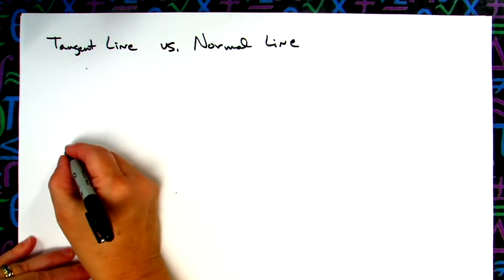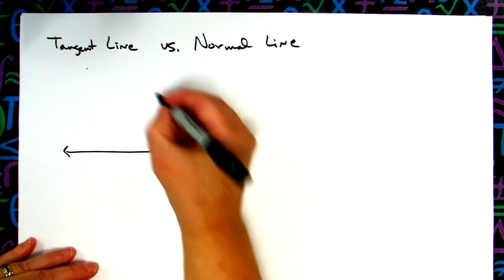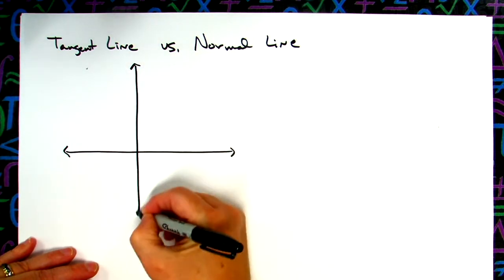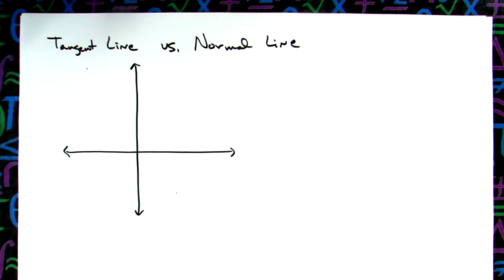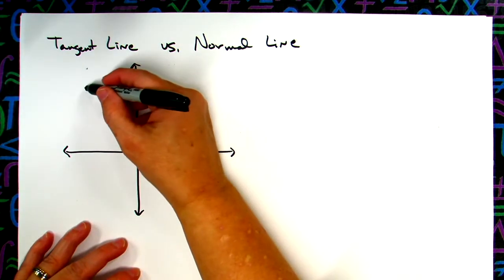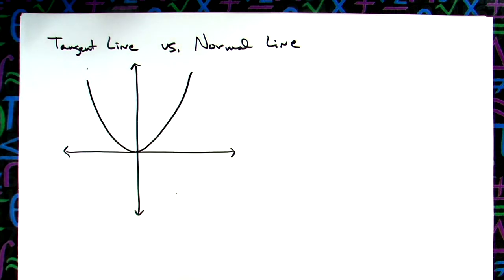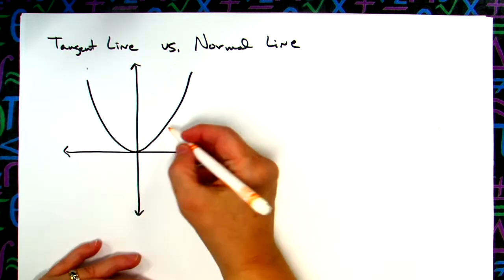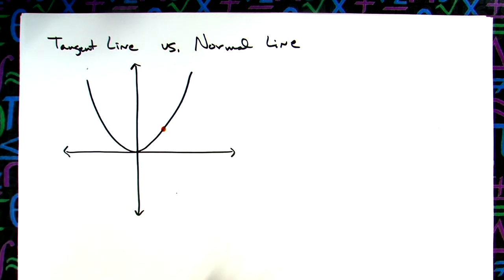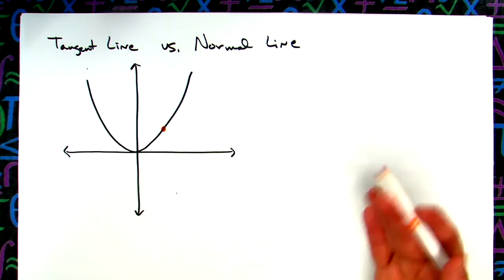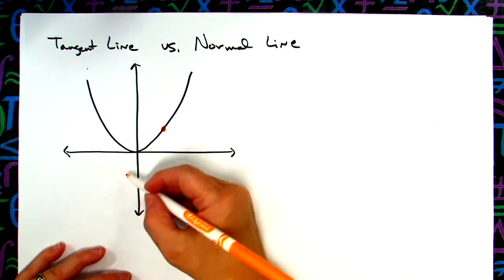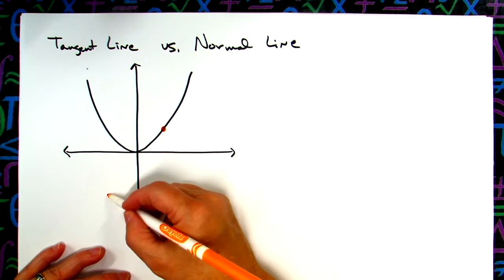Let's do this from a graphical standpoint just so we conceptually understand this. Let's say we've got a parabola — a nice, relatively straightforward parabola with the vertex at the origin. Now we've already learned that at any given point, I can have a line at a point, and as long as I know what that curve is, we can take the derivative and find the slope — we know the tangent line at that point.